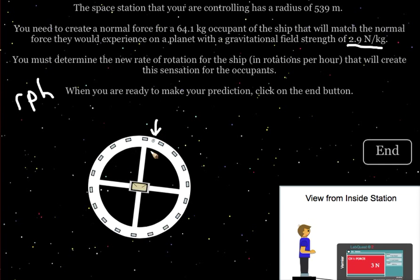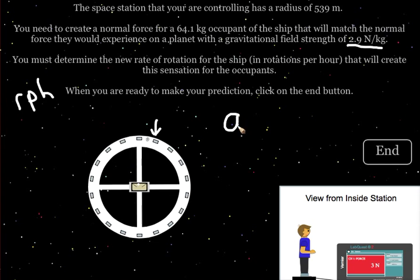That normal force will be pushing them toward the center of the station, and this will be necessary to keep them in circular motion. Without the walls of the space station, the person would travel in a straight line as their natural tendency would dictate.